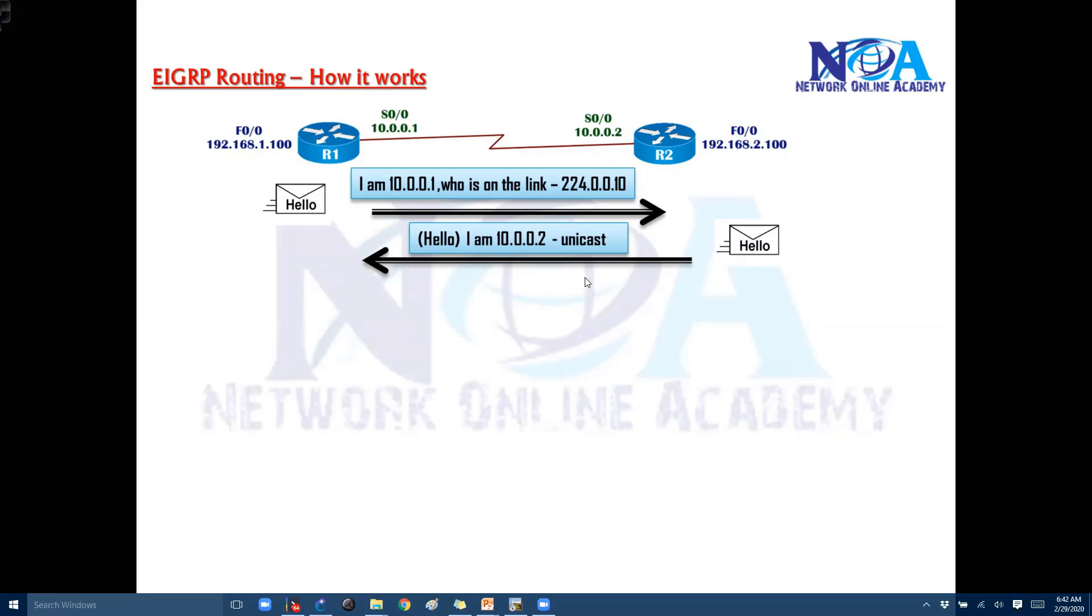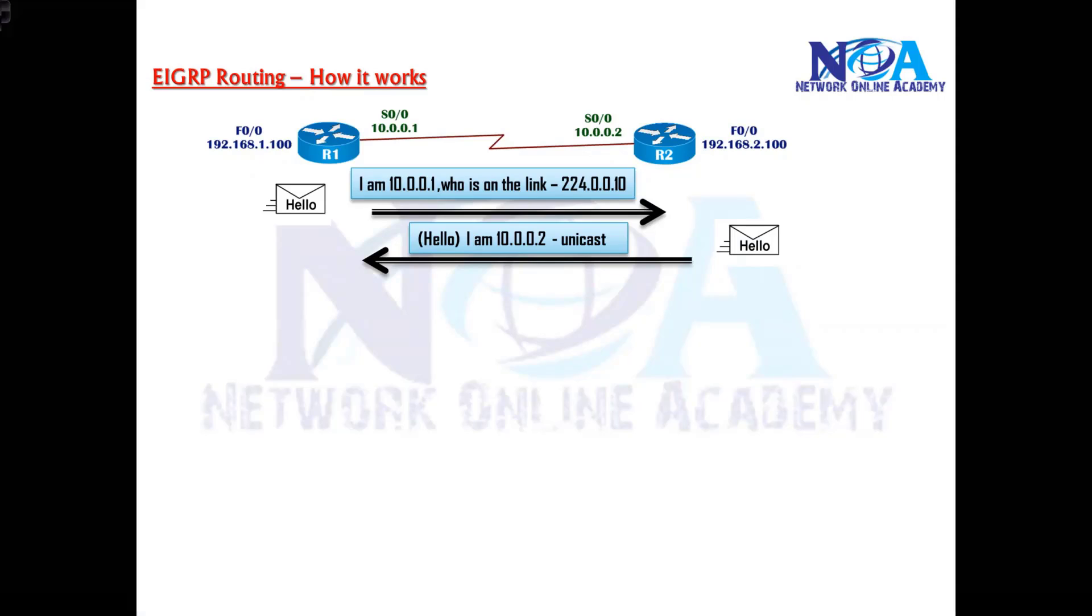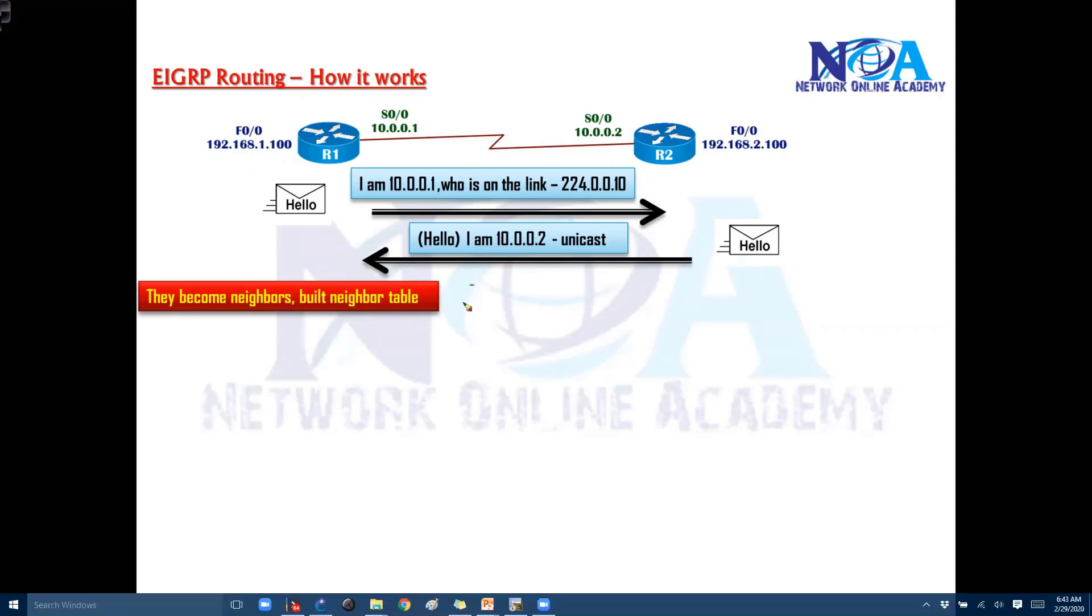So a similar process you have in OSPF as well. And once they send and receive the hello, once I say hello to you and you just reply to that hello message, then both will become neighbors. Now router 1 and router 2 will form a neighbor relationship and they build a neighbor table. We can also verify that neighbor table by using the show ip EIGRP neighbor command.